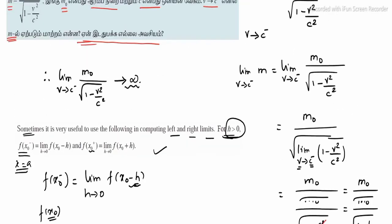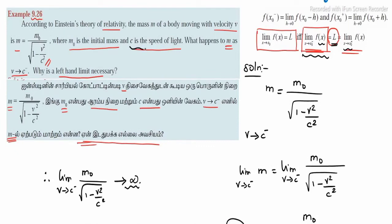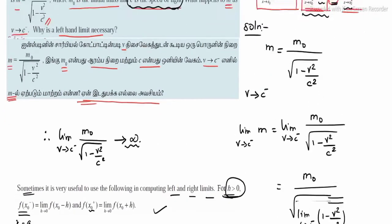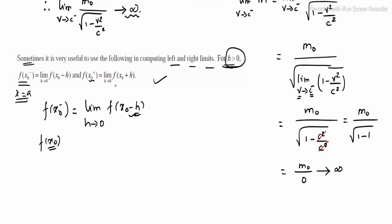Once again: c is the speed of light and v is the velocity. The maximum value of velocity is c. Any moving body has velocity less than c. Since v is less than the speed of light, we subtract the smallest value. This is the reason why the left-hand limit is necessary.